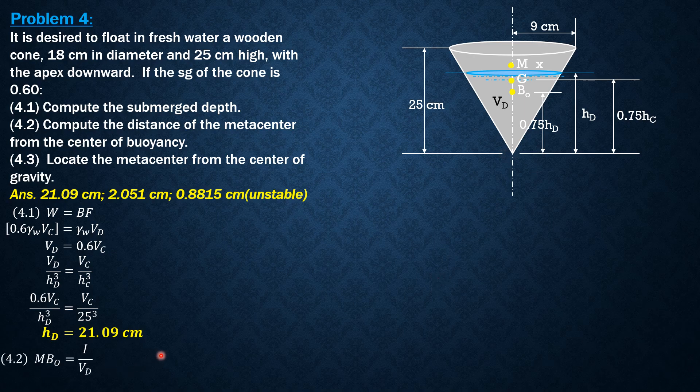So MBO is I over V, where I is pi over 4 times X to the fourth, and volume displaced is 0.6 of V sub C. By similar triangles to solve for X, X over HD 21.09 equals 9 over 25. So X is 7.592 cm. Substitute into this formula: MBO equals pi over 4 times 7.592 to the fourth over 0.6 of volume of cone, pi over 3, radius of cone squared times height of cone.